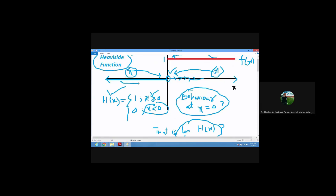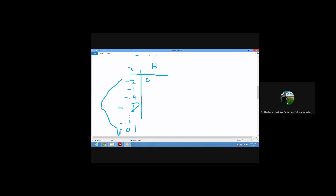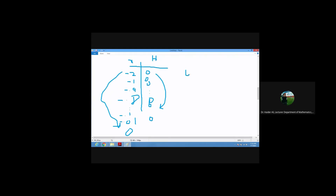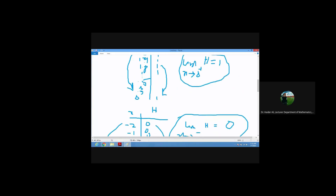If you look at the outputs — the blue line — it is approaching towards zero. This function is piecewise constant, so the outputs are also going towards zero. The conclusion from this table is: the limit as x approaches zero from the negative side gives outputs going towards zero. From the right it goes to one, and from the left it goes to zero.